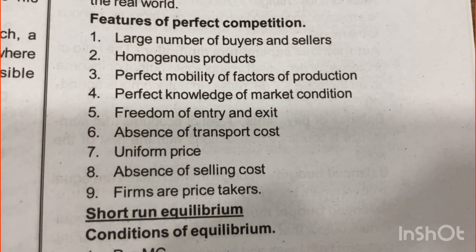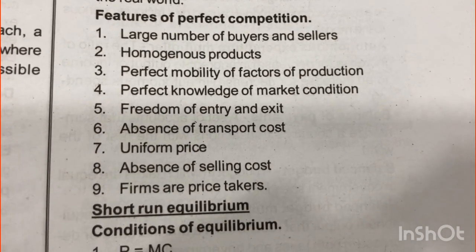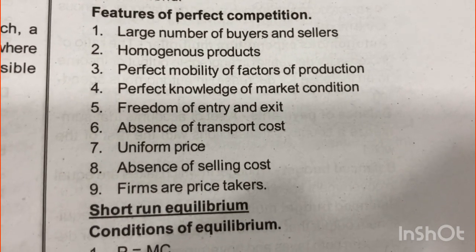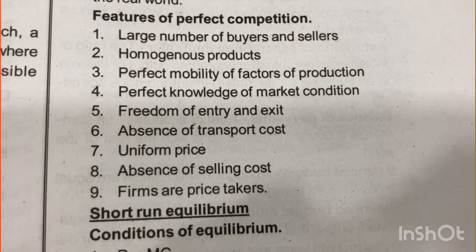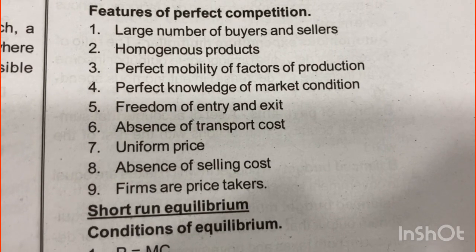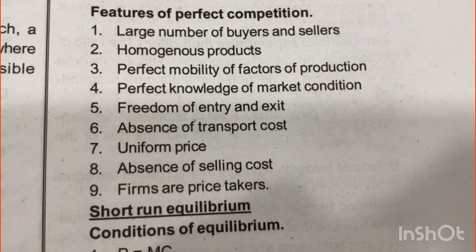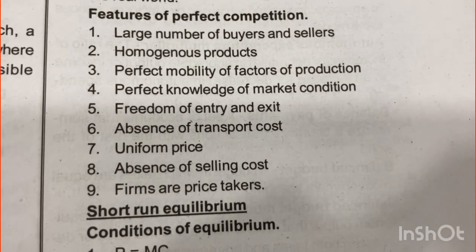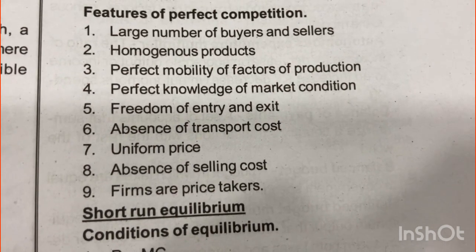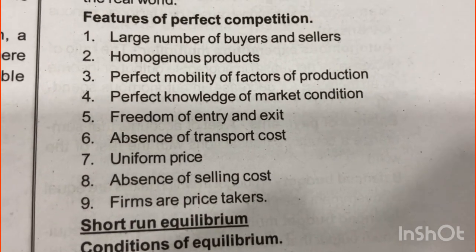Homogeneous products means one type of product — one type of price, same package, same size, same quality, all the same. Factors of production have perfect mobility. Market conditions are well known and there is perfect knowledge. Freedom to enter and exit, no transport cost, no selling cost, everyone has a uniform price, and the firms are price takers. This is the perfect competition features.